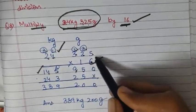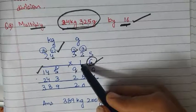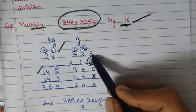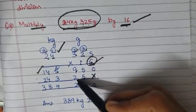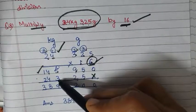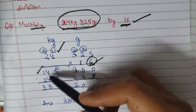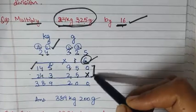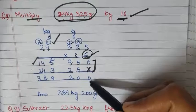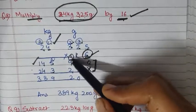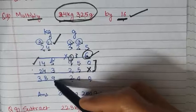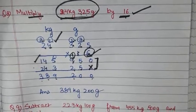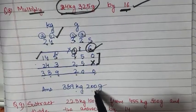Now with 6 we are done. We move to the next digit, which is 1. Put a cross here, then: 1 × 5 = 5, 1 × 2 = 2, 1 × 3 = 3, 1 × 4 = 4, 1 × 2 = 2. Now we add these two rows. 0 + 0 = 0; 5 + 5 = 10, carry 1; then 12, carry again. On adding we get 9, then 8, then 3. Finally our answer is 389 kg 200 grams. Clear, children?